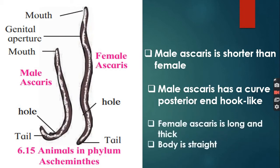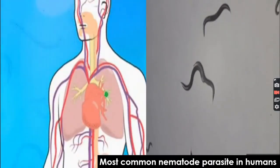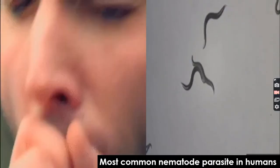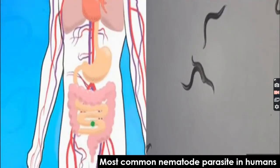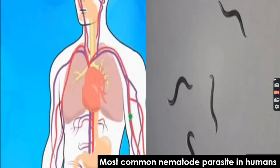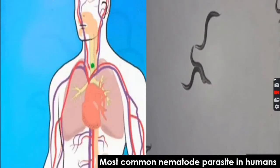The female Ascaris is longer and thicker — it is longer and slightly thicker than the male. Its body is straight as compared to the male Ascaris. The most common nematode parasites in humans are pinworms and hookworms, mostly found in human beings.